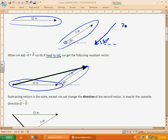Now, this would be 7 meters at, and you could either call this 30 degrees south of west, or you could call it 210 degrees, right?